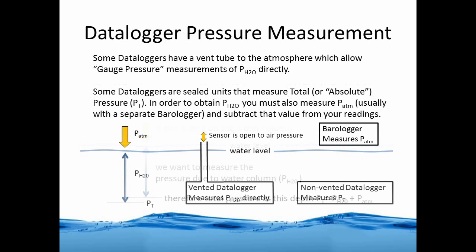Let's look at how data loggers measure pressure. Some have a vent tube to the atmosphere, which allows gauge pressure measurements of the water pressure directly. Some data loggers are sealed units that measure the total or absolute pressure. In order to obtain the pressure of water above, you must also measure the pressure of the atmosphere — usually with a separate device called a barrel logger — and then subtract that value from your pressure readings of water.